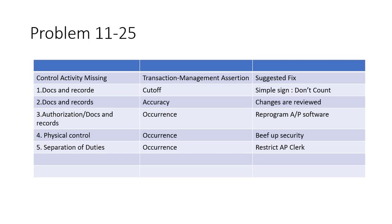Number six: during the physical count of inventory at the retail grocery, one counter wrote down the wrong description of several products and miscounted the quantity. Generally speaking, there's a team going around counting, and then there's a backup team that makes sure they counted correctly with the right descriptions. That clearly didn't happen here. The answer is this is independent checks on performance — the backup crew would independently check what the initial crew did. The management assertion violated is accuracy, and the fix is to require follow-up counts by staff.